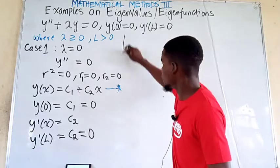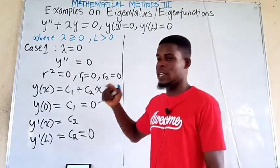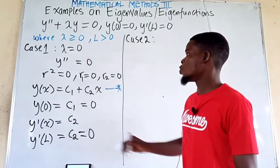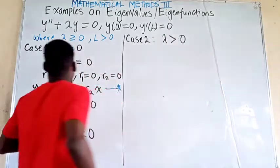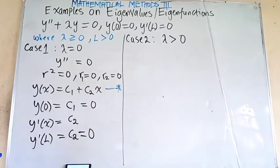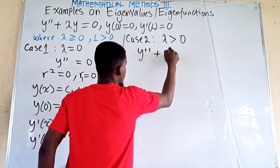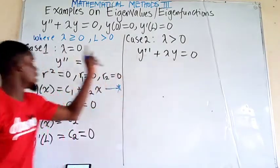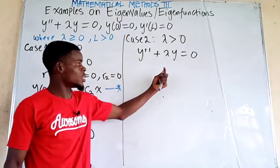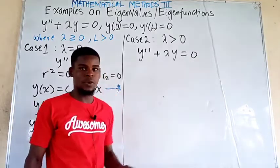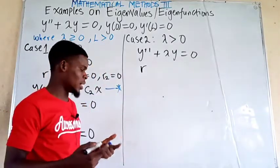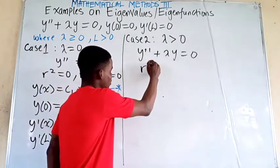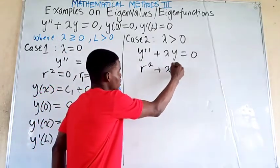Now for case 2, when lambda is bigger than 0. We go back to the original equation. Since lambda is not 0, the equation does not reduce. We write the characteristic equation: r squared plus lambda equals 0. You can use any letter such as r or m, but avoid y to prevent confusion.